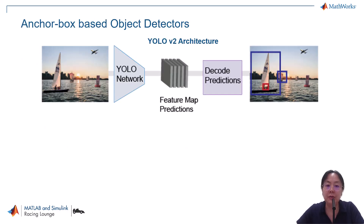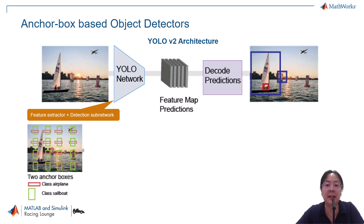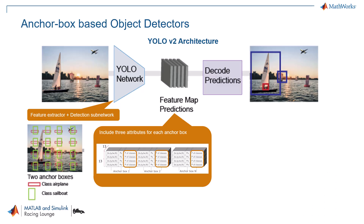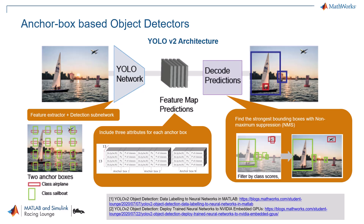There are several versions of YOLO, and most of them rely on anchor boxes, which are predefined reference boxes that help the model predict where objects are and how big they are. For example, in YOLO v2, the network includes a feature extractor and a detection subnetwork that predicts three attributes of each anchor box: anchor box offset, refining the position of the anchor box; object confidence score, indicating how likely the anchor box contains an object; and class probability, which predicts the types of objects in the anchor box. Finally, an algorithm called non-maximal suppression can be used to filter out overlapping boxes and keep the most confident predictions.